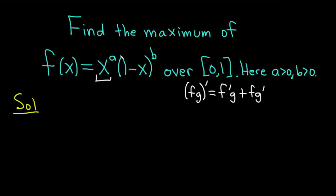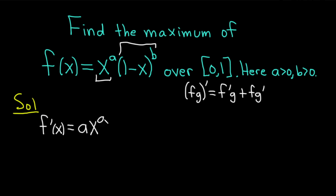This is our first function, x^a, and this is our second function, (1 minus x)^b. So f prime of x: taking the derivative of the first, x^a, we use the power rule — bring down the a, subtract 1 from the exponent, getting a times x^(a-1) — times the second, (1 minus x)^b.